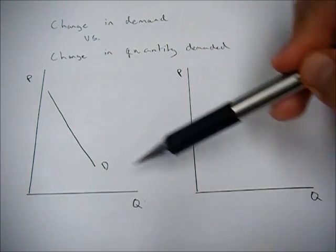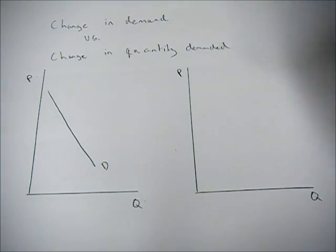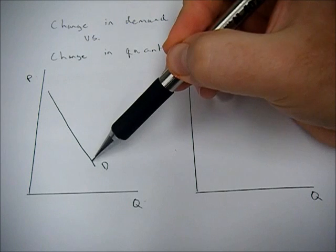We have our typical graph with Q quantity on the x-axis, P price on the y-axis, and we draw our demand curve.